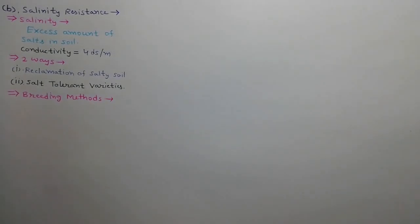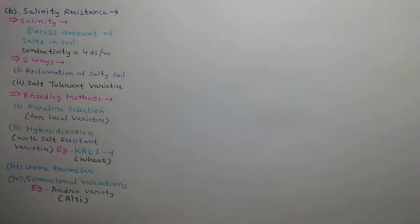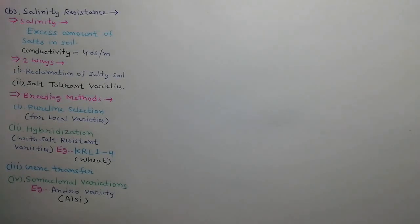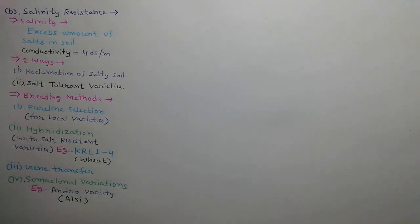The following breeding methods are used for resistance to salinity: pure line selection, which is a successful method in local varieties of salty areas; hybridization with salt-resistant varieties, for example KRL14, which is a salt-resistant variety of wheat; gene transfer from related species; and somaclonal variations, for example the Andro variety.